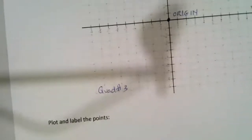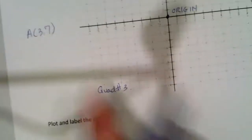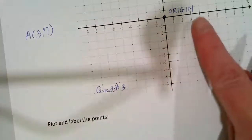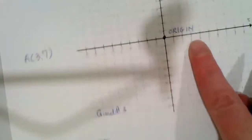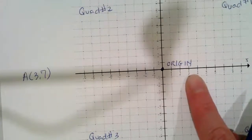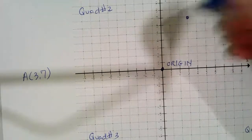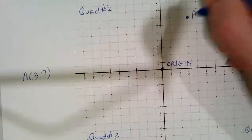So the first point is A and it's the point (3, 7). So I'm going to write it up here. A is the point (3, 7). So that means the X value is three and the Y coordinate is seven. So I go over to the three, and then I'm going to shift up seven. And that I'm going to label point A.